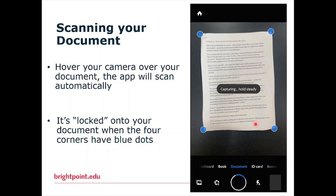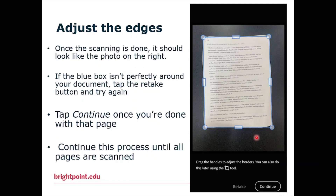At this point your app should automatically take a picture. Once the scanning is done, it should look like the photo on the right. If the blue box isn't perfectly around your document, tap the Retake button and try again, or you can adjust the little widgets on the side of your document. Once it looks good enough, tap Continue. Continue this process until all pages are scanned.